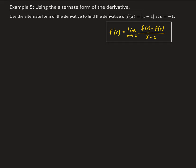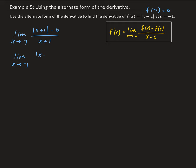So let's go ahead and apply this definition. We have the limit as x approaches negative 1 for our function, which is the absolute value of x plus 1 minus f of c. So f of negative 1 is 0, so we have minus 0 divided by x minus c, and c is negative 1, so that gives us x plus 1. This simplifies to the limit as x approaches negative 1 of the absolute value of x plus 1 all divided by x plus 1.